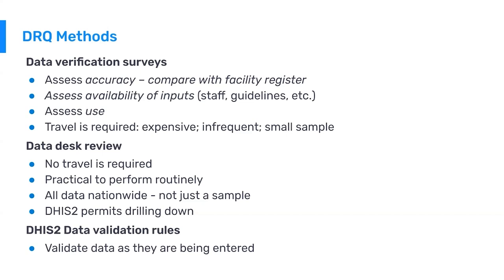Validation rules can also be run ad hoc by a user using the data quality app in DHIS2 — they can run a validation rule analysis and DHIS2 produces a list of all triggered notifications. The third option is to have this run automatically: DHIS2 can be configured using the scheduler application to run validation rules automatically, with notifications sent to users via email or SMS. This way, the validation rule notifications come to you rather than requiring the user to go look for them.